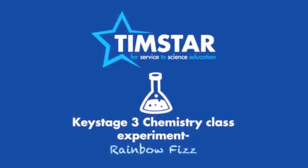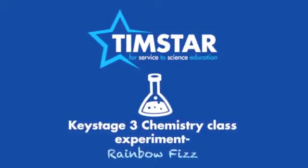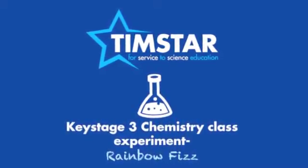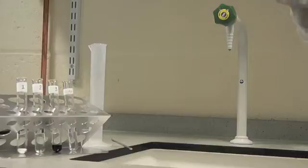Key Stage 3 Chemistry Class Experiment: Rainbow Fizz. Collect four test tubes, test tube rack and a measuring cylinder. Label the test tubes one to four.